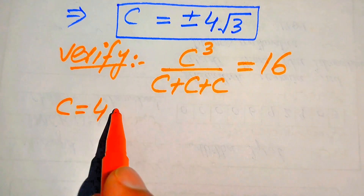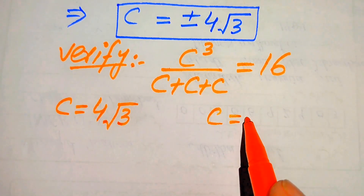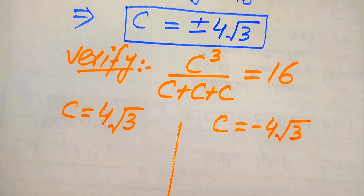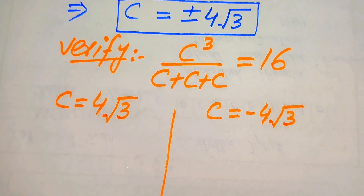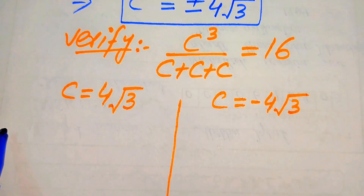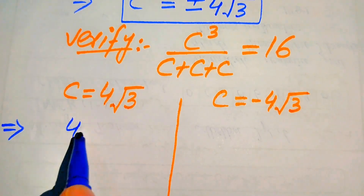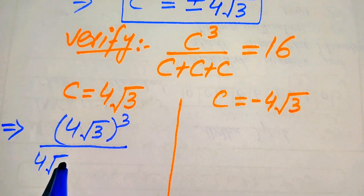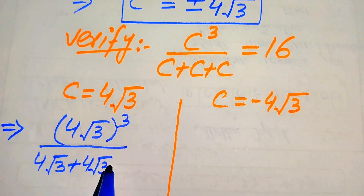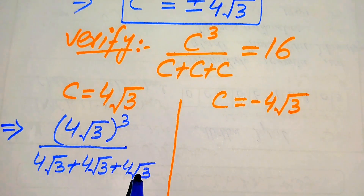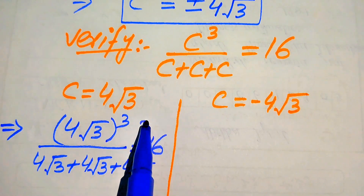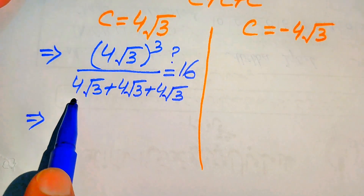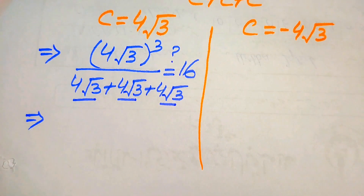In the first case we choose the positive value, which is 4 times square root of 3, and in the second case we choose the negative value, minus 4 times square root of 3. We verify both roots. When we put the positive root into the left-hand side, it becomes: (4 times square root of 3) cubed, divided by 4√3 plus 4√3 plus 4√3, and this equals 16. We check whether our left-hand side equals 16.